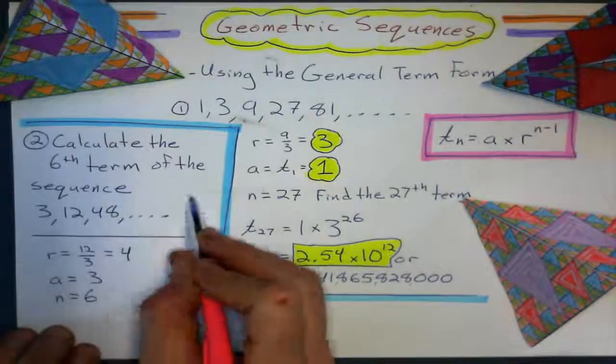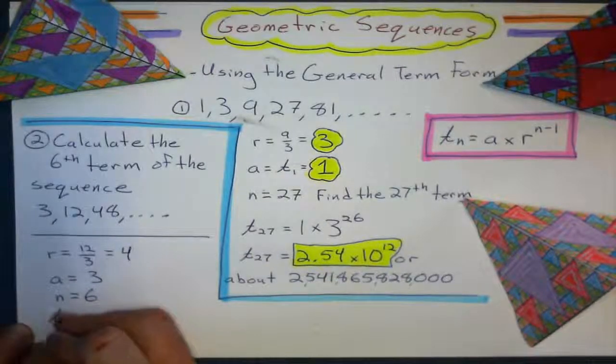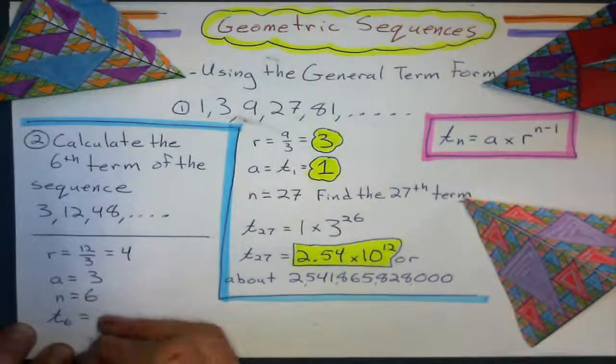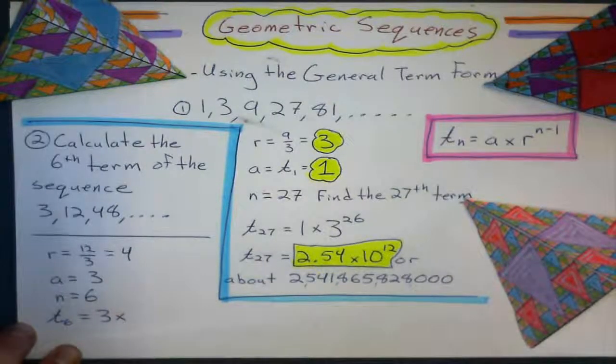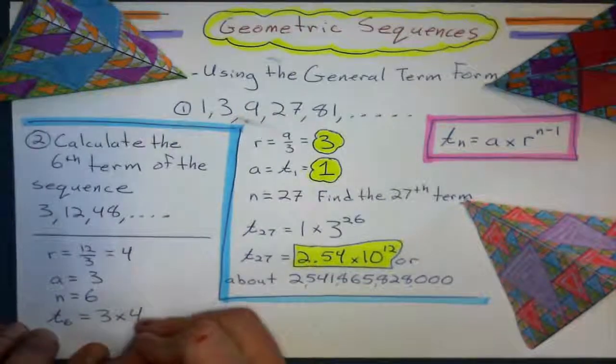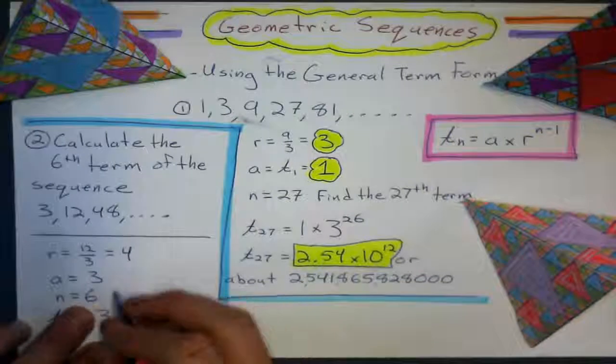I could have, you know, multiplied by four, multiplied by four, multiplied by four. Or I can just say, well, the sixth term is going to equal the first term times common ratio to the power of six minus one.